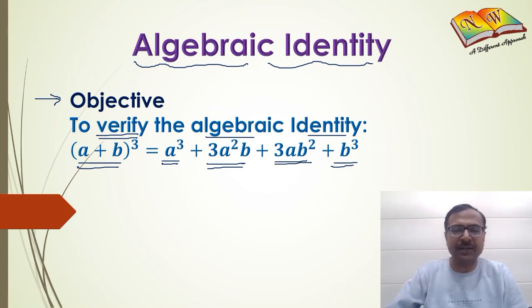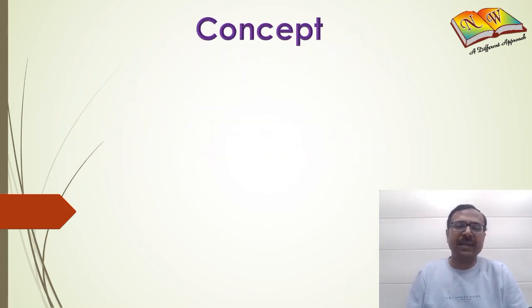Let's see the concept behind this. In the expansion of (a+b)³, we have to multiply (a+b) three times.